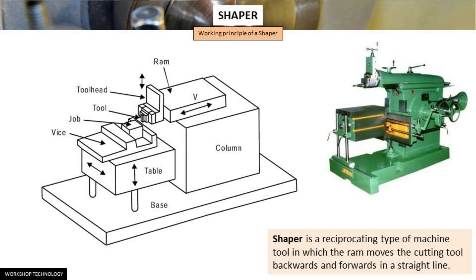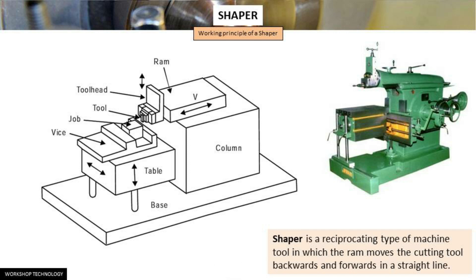The shaper is a reciprocating type of machine tool in which the ram moves the cutting tool backward and forward in a straight line. The basic components of a shaper are shown here. It is intended primarily to produce flat surfaces, and these surfaces may be horizontal, vertical, or even inclined. In general, the shaper can produce any surface composed of straight line elements.